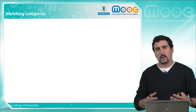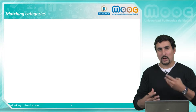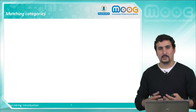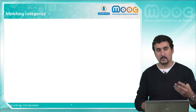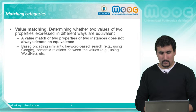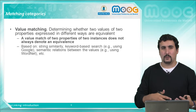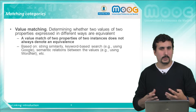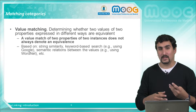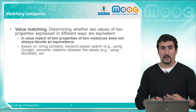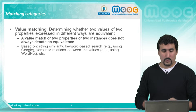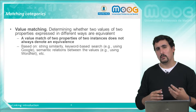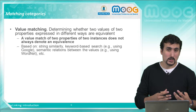How can we identify other resources that are similar to ours or that can be linked to our resources? There are different categories of matching that we can execute in isolation or combined. The first one is value matching, where we determine whether two values of two properties are the same or equivalent enough. We state that two objects are the same based on techniques such as string similarity, the use of keywords, or exploiting their semantic relations using services such as WordNet. When using this we have to be careful because we cannot always conclude that two individuals with a property match are the same.